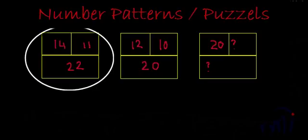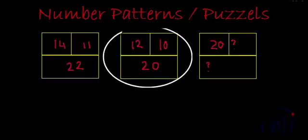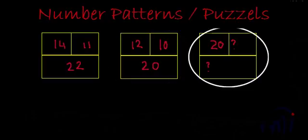As you can see in the first box we have 14, 11, and 22. Second box we have 12, 10, and 20. And in the third box we have 20 and two blank spaces.